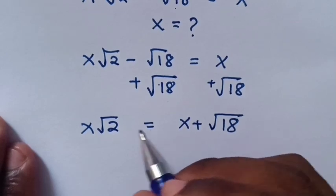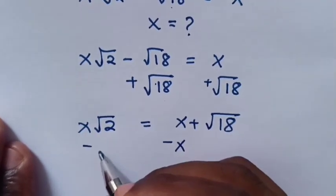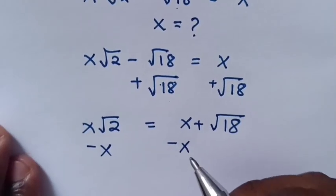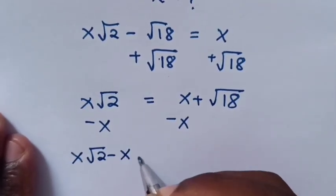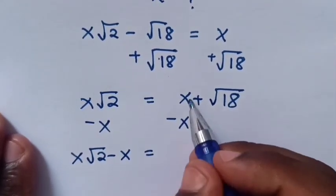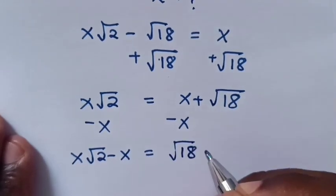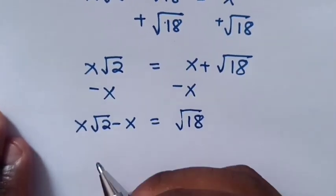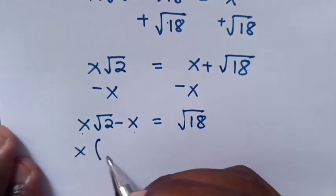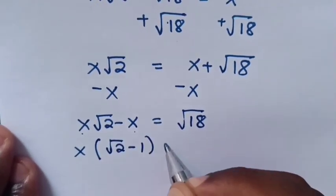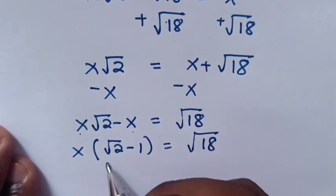Again, we subtract x from both sides so as to move x to the left side. So, x square root of 2 minus x is equal to square root of 18. Now, x is common — out of bracket: x times (square root of 2 minus 1) is equal to square root of 18.